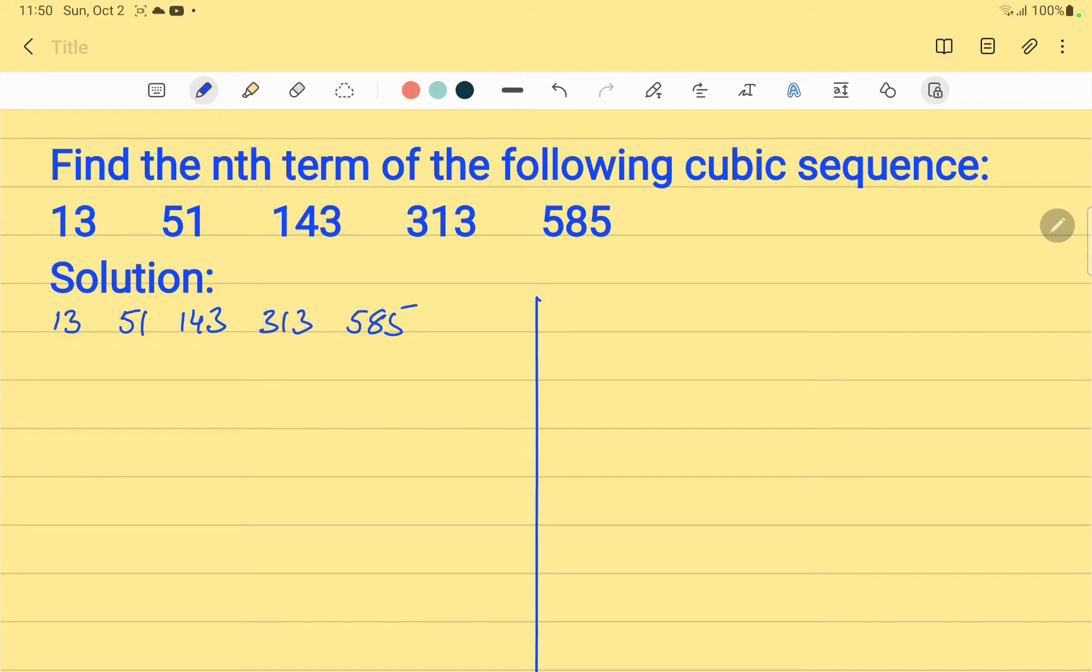Let us find the differences of the sequence. We can see that these differences are not the same. We subtract 13 from 51 and we get 38. Then we subtract 51 from 143 and we get 92. Then we subtract 143 from 313 and we get 170. And subtracting 313 from 585, we get 272.